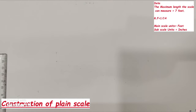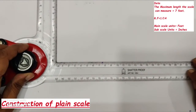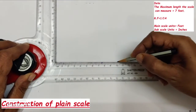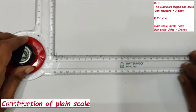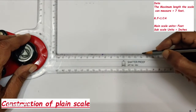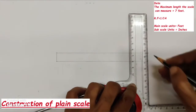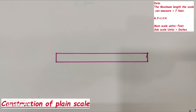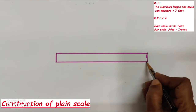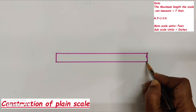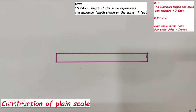We construct the plane scale with a length of 15.24 cm and an assumed width of 1 to 1.5 cm — draw one rectangle. The length of the rectangle represents 7 feet, so we need to divide it into 7 equal parts. Dividing 15.24 cm into 7 equal parts directly with a scale is not possible, so we use the acute angle line method, also called dividing a line into equal parts.